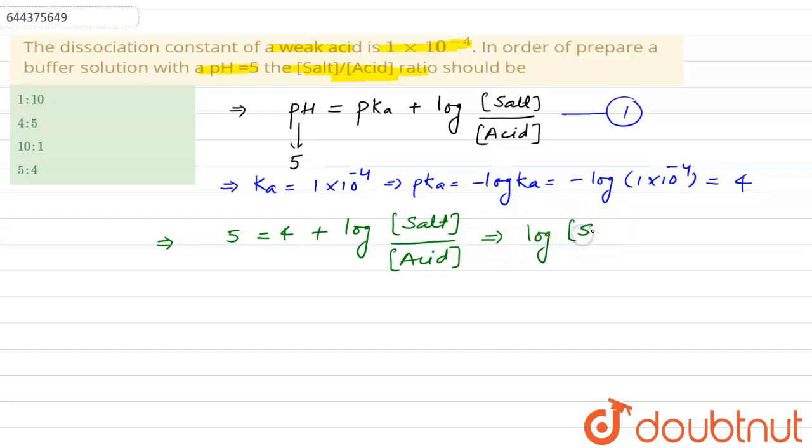From here, log of concentration of salt divided by concentration of acid will be equal to 5 minus 4 equals 1. So concentration of salt divided by concentration of acid will be equal to 10.